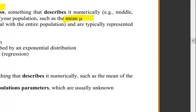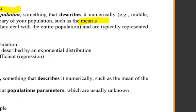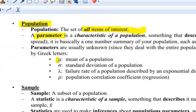Parameters are usually Greek letters. You'll see mu for the mean of a population, sigma for standard deviation, lambda for failure rate, rho for the population correlation coefficient.